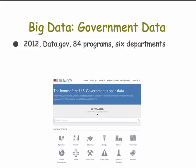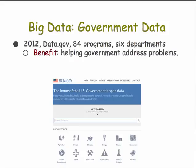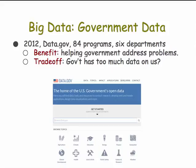Big data has made its way into government. There's a website called data.gov that was opened in 2012. It spanned 84 different government federal programs and six federal departments. The idea is to help government address problems by making this data public, open, and accessible. But this raises questions: does government have too much data on us, and can it secure these data without violating our privacy?